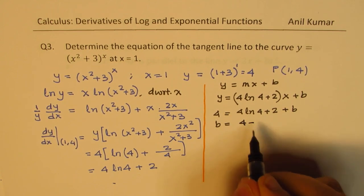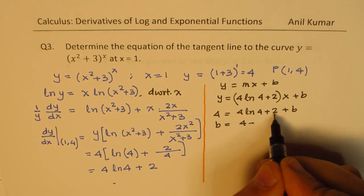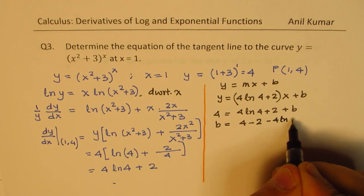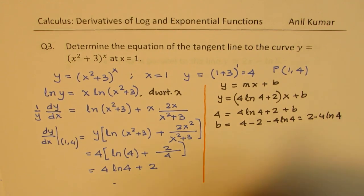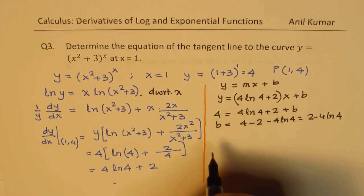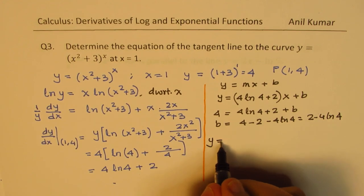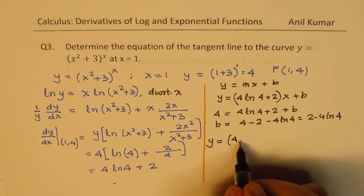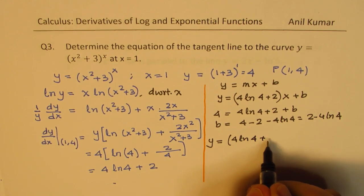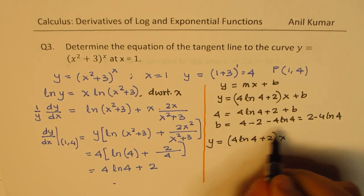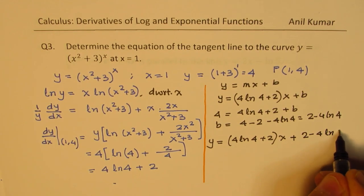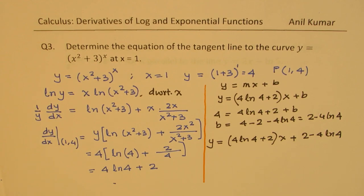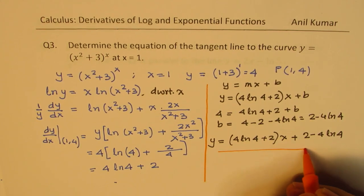To find the equation of the tangent line we use y equals mx plus b. We know the slope m is 4 ln 4 plus 2, so y equals (4 ln 4 plus 2)x plus b. Substituting the point (1, 4): 4 equals (4 ln 4 plus 2) plus b. Solving for b: b equals 4 minus 4 ln 4 minus 2, which is 2 minus 4 ln 4. So the equation is y equals (4 ln 4 plus 2)x plus (2 minus 4 ln 4).